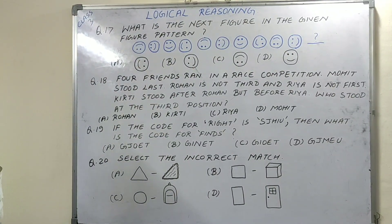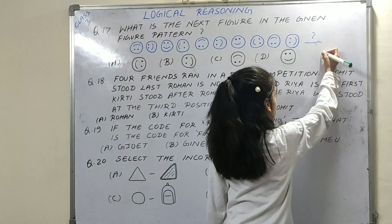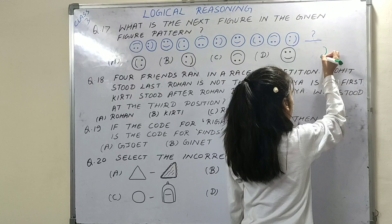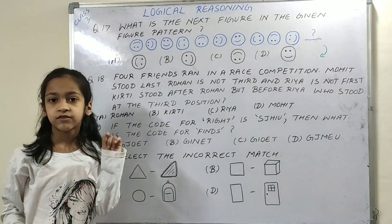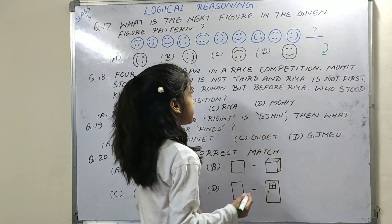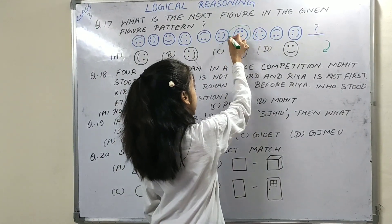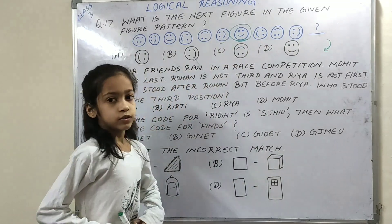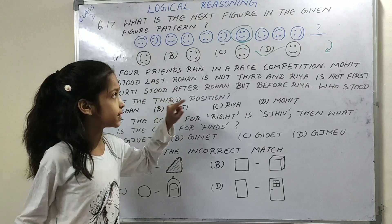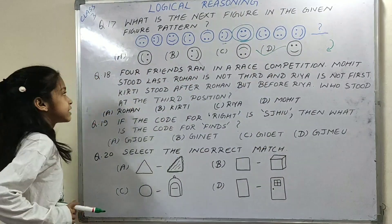Next question, what is the next figure in the given figure pattern? So here is a figure pattern. This is clockwise, the clock is going like this. This is here last. So if this is like this, then after this, this smiley will come. So option D is the right option, clockwise.